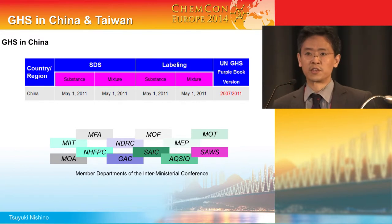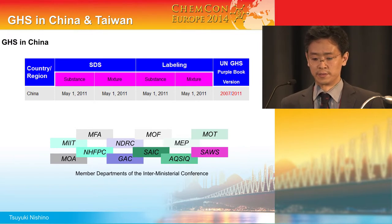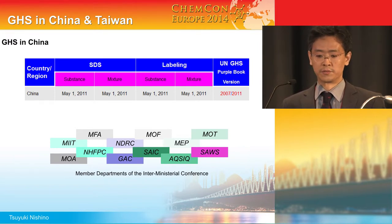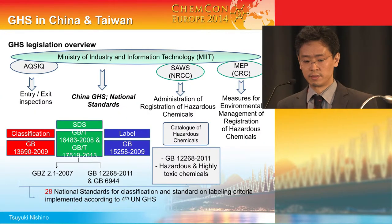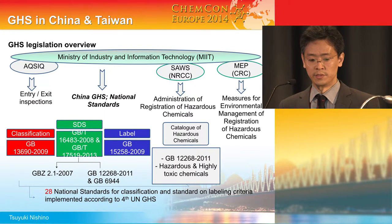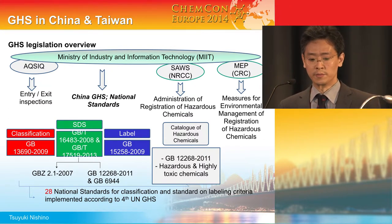Currently, China GHS is based on the second and fourth revised edition of GHS. For classification and labeling, there are two mandatory standards: GB13690 for classification and GB15258 for labeling.